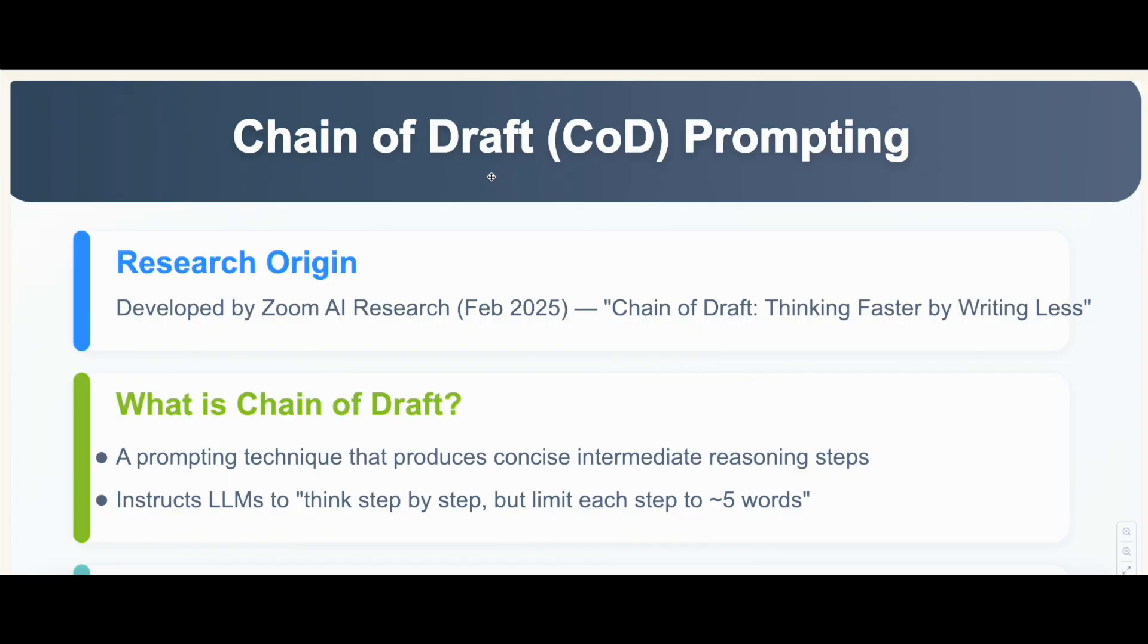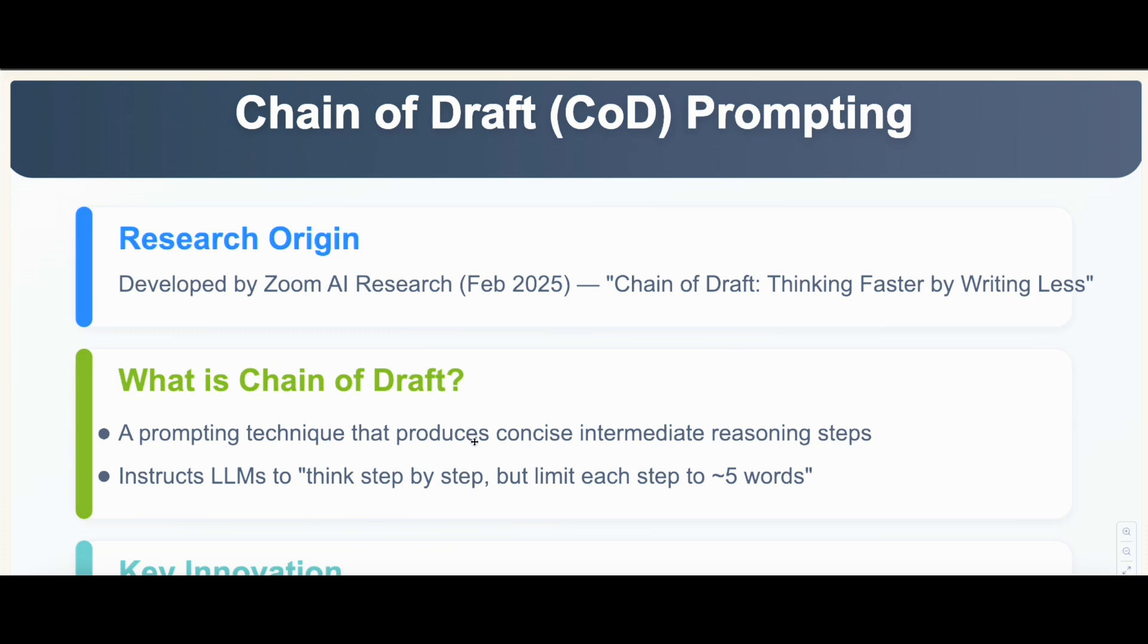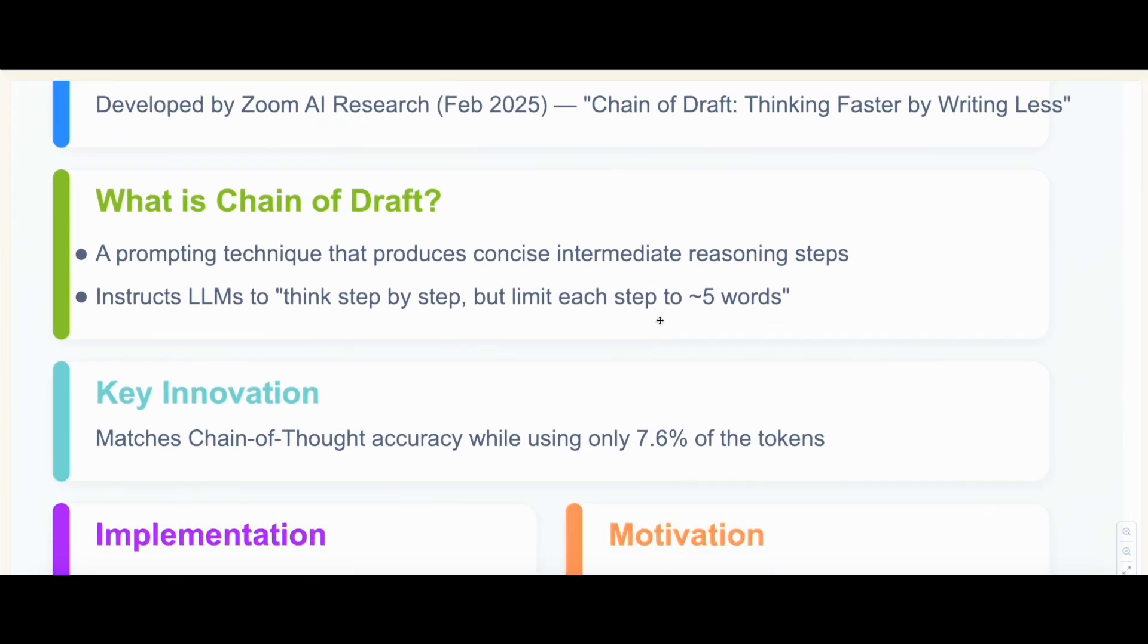Let me be more precise about what Chain of Draft is. It's pretty recent from February 2025. A research development team from Zoom came up with this Chain of Draft: thinking faster by writing less. It's a prompting technique that lets you have more precise reasoning steps but in much shorter length. We just ask the LLM to think step by step but limit each step to five words.